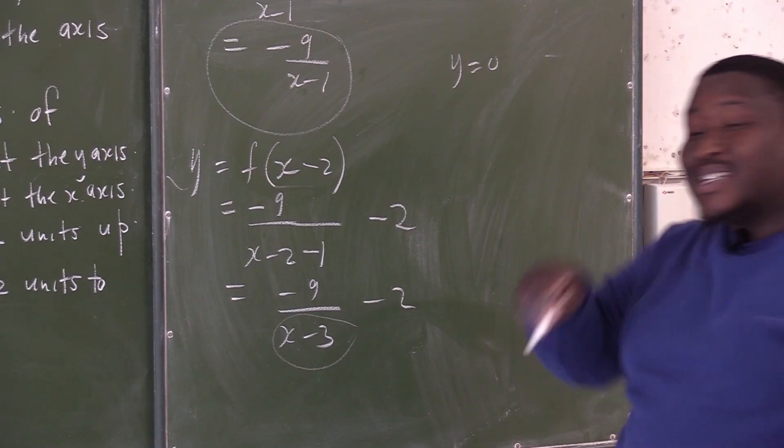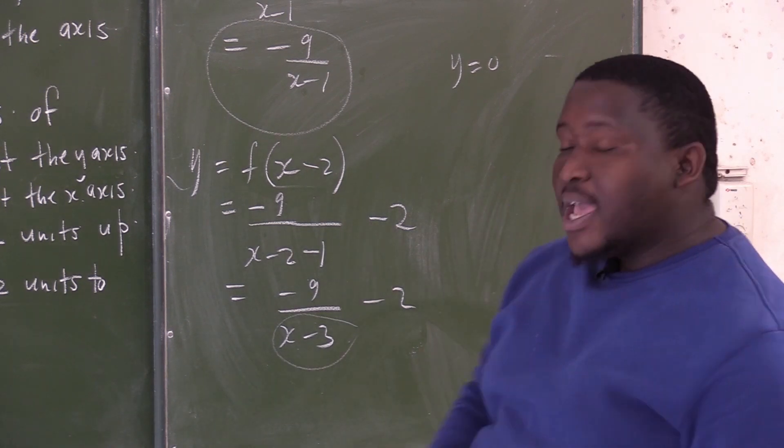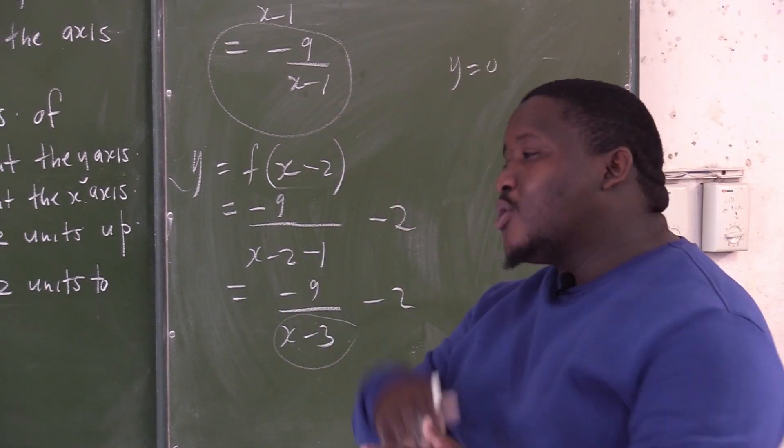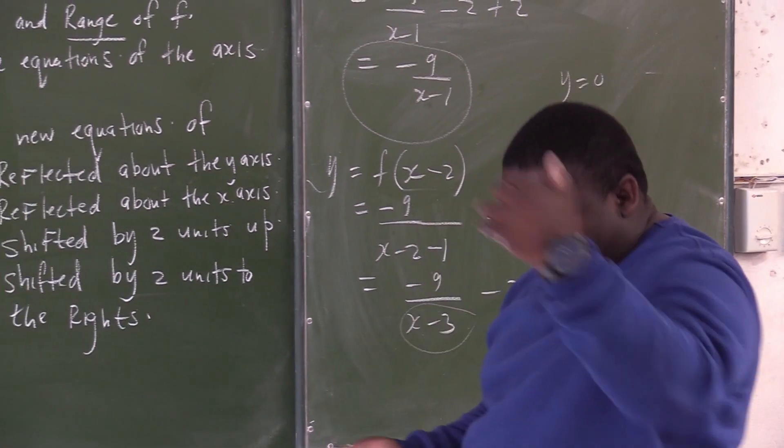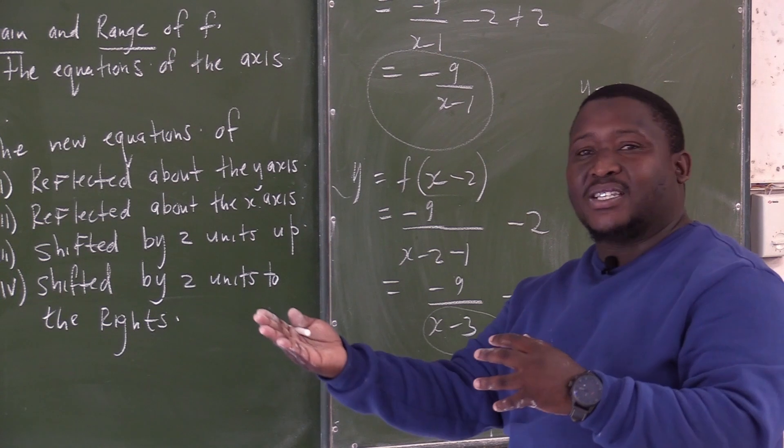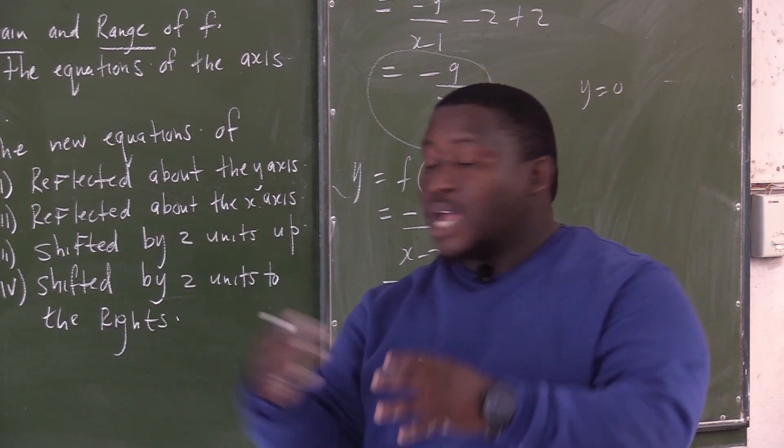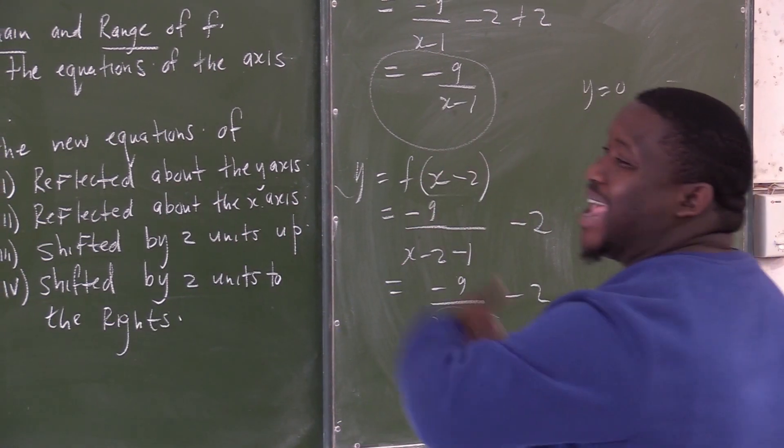What is happening when you shift the graph? So what I need to emphasize here is that if the movement is towards your right, when you go to the equation, you replace x with x minus the shift.